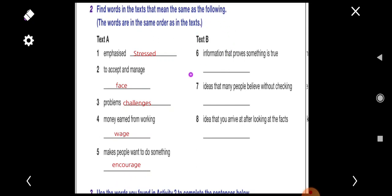Now we move to text B. Of course you will read the text alone, then answer the question yourself. We're here just to help you with the answers. Number six. Information that proves something is true. Yes, it's evidence. Idea that many people believe without checking. Yes, assumption. Number eight. Idea that you arrive at after looking at the facts. Yes, it means conclusion. These are the answers for your exercise, exercise number two in your book.